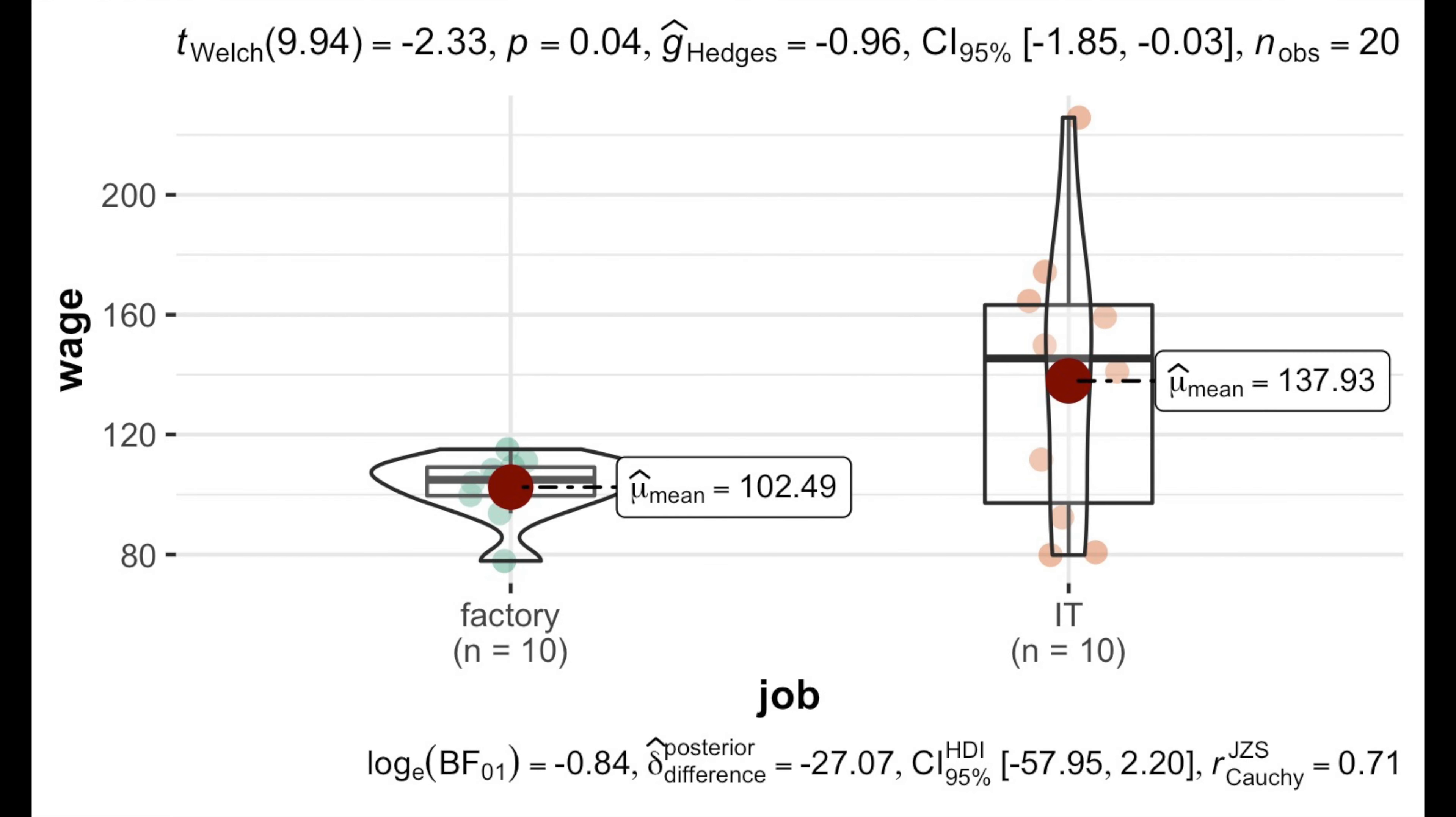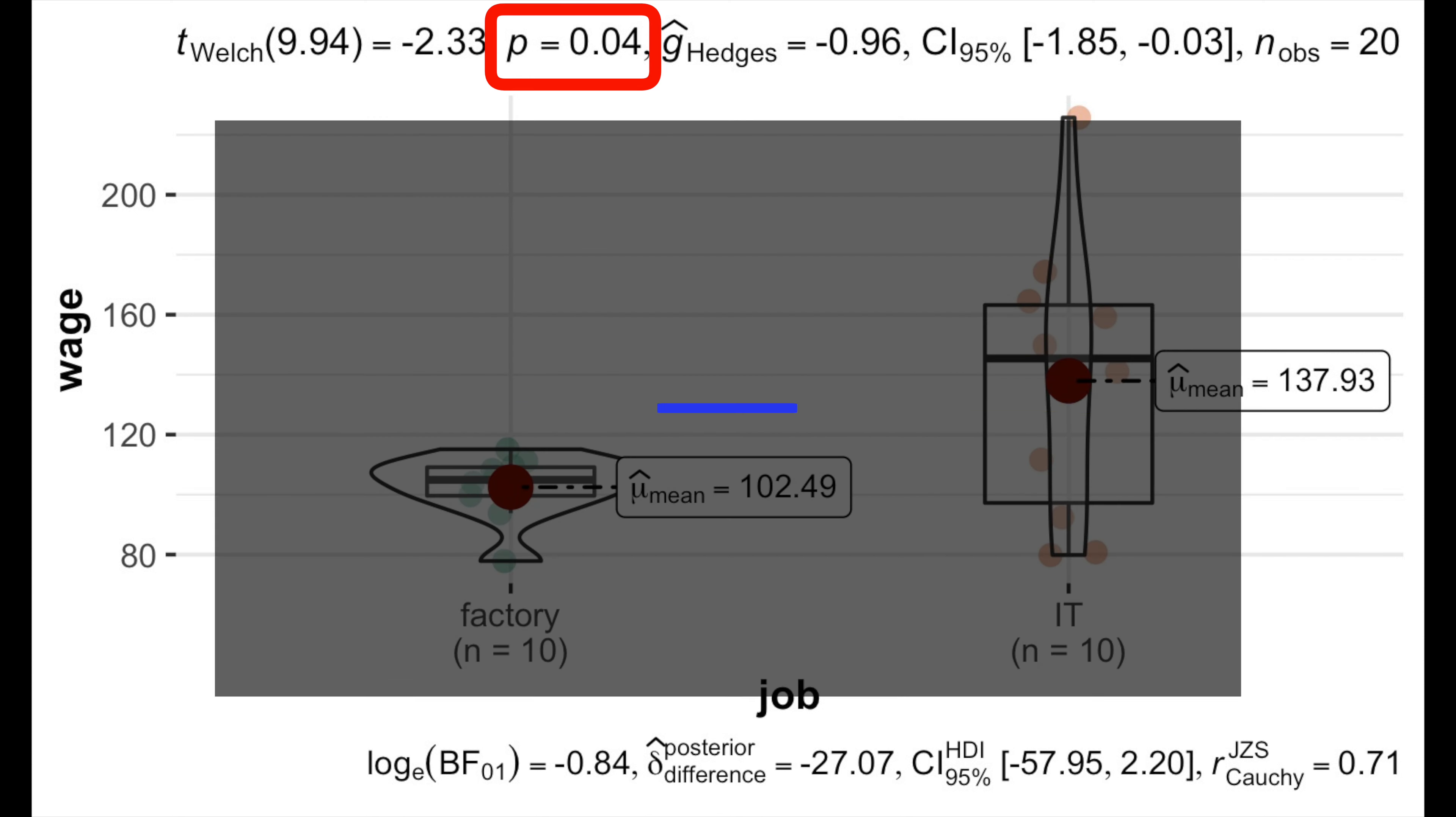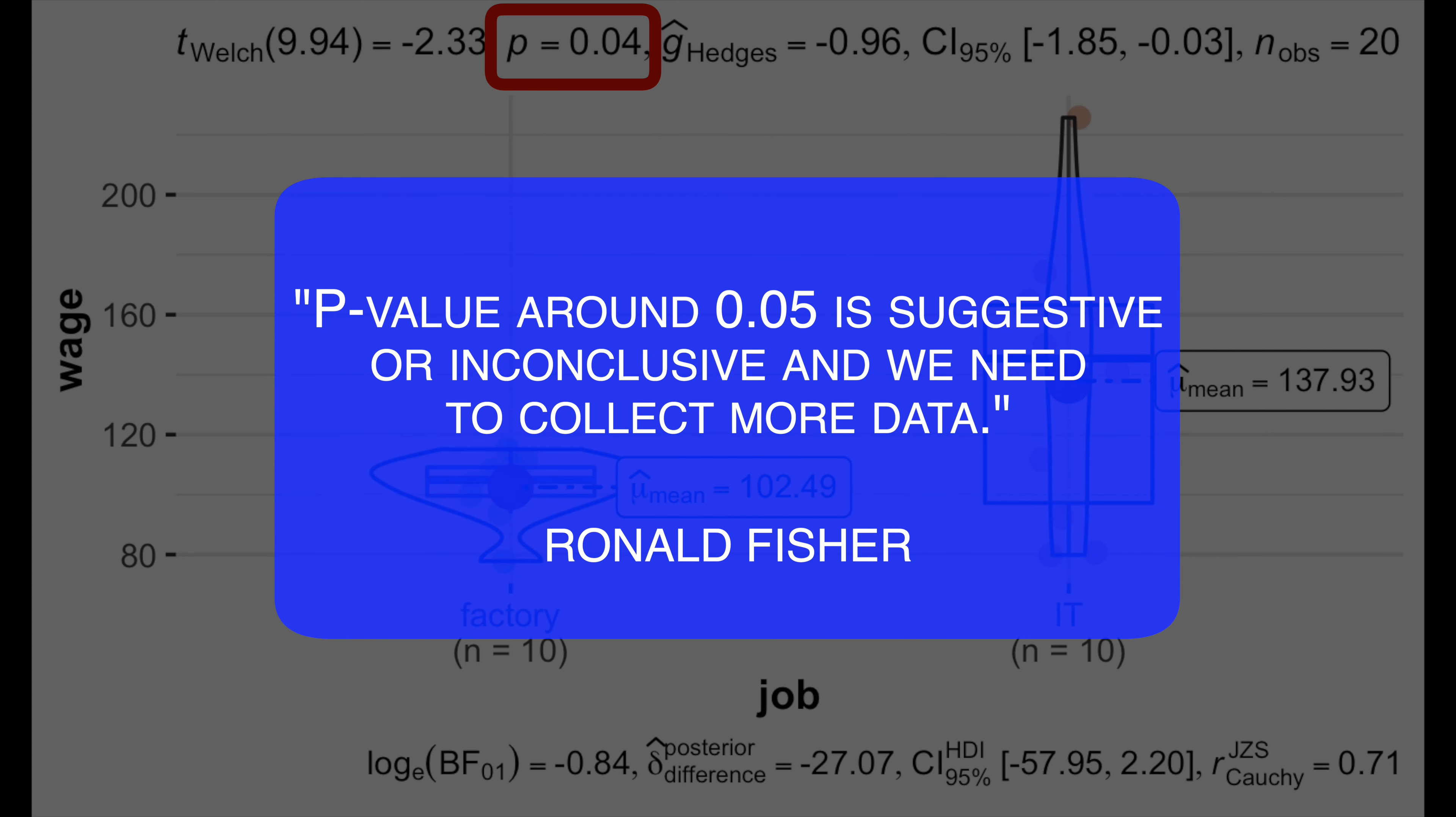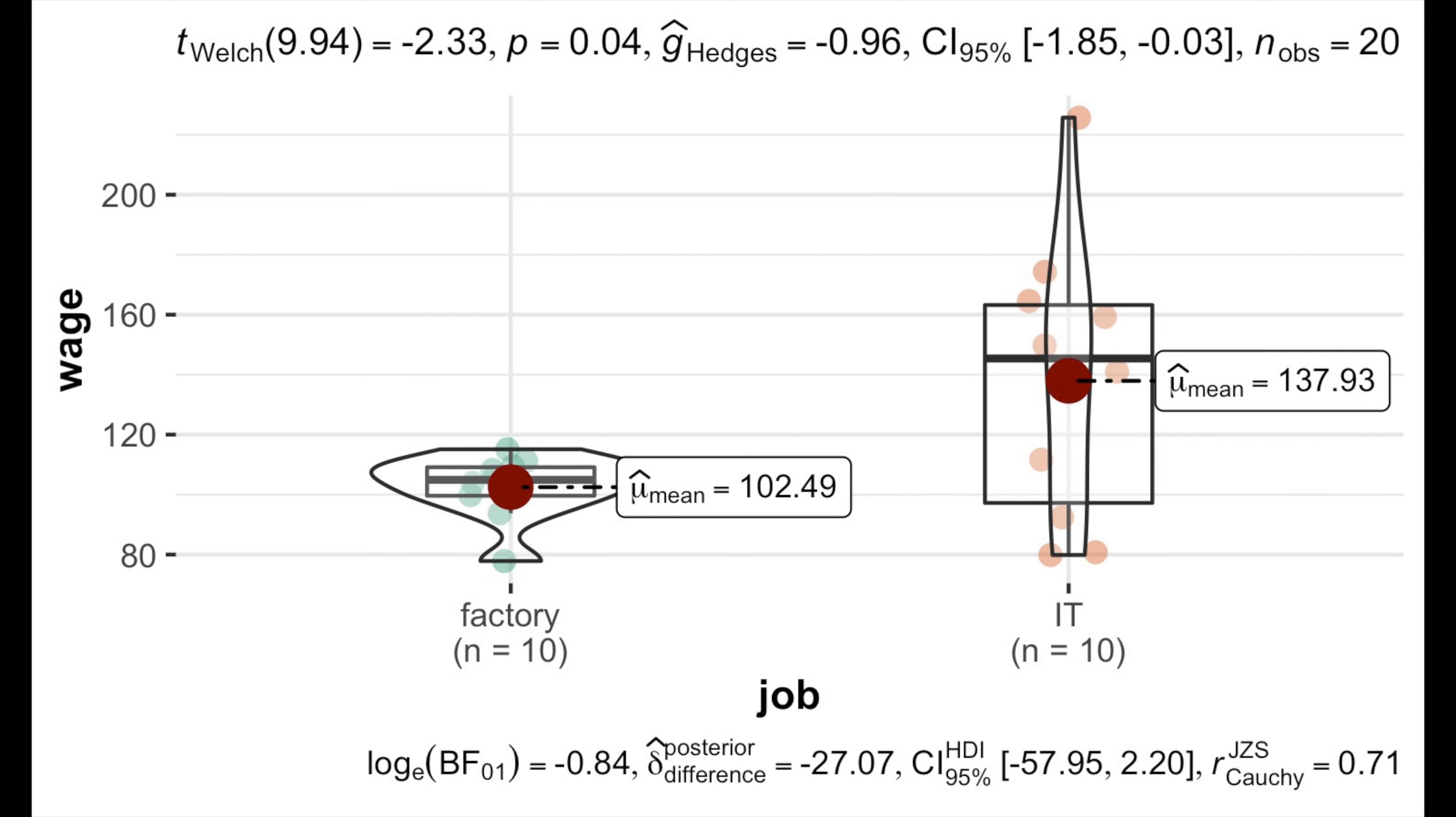And if our p-value is around 0.05, like 0.04 in our example, Ronald Fisher, the father of modern statistics himself, recommended to treat such result as suggestive or inconclusive and collect more data. And that's all we can do.